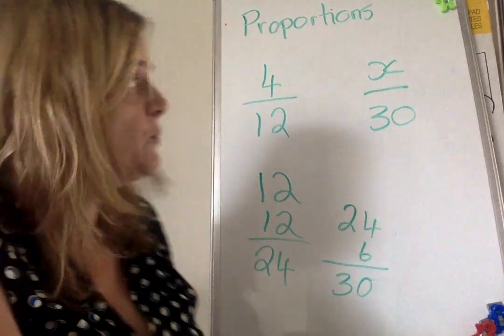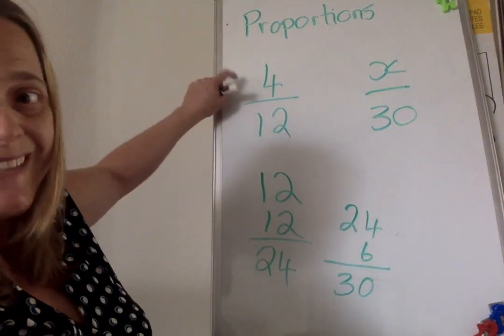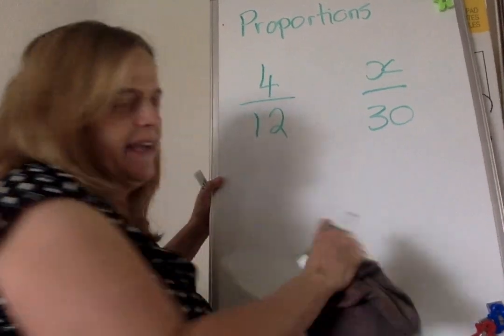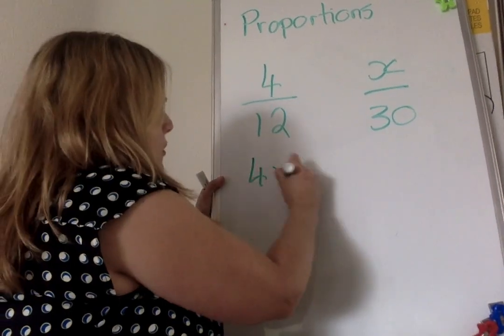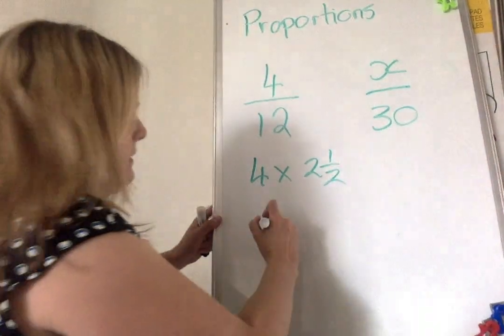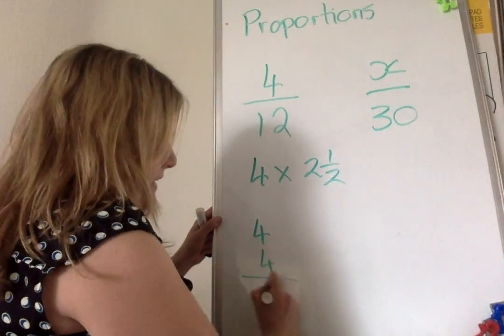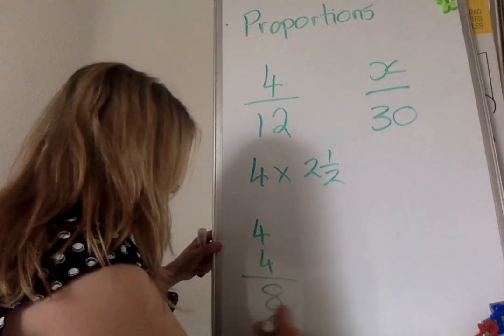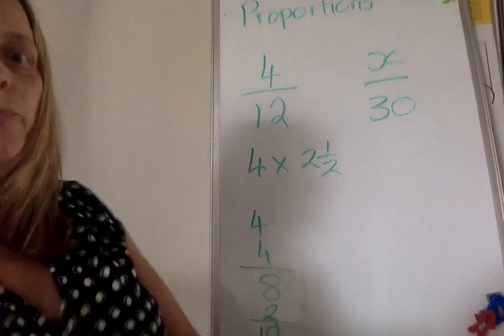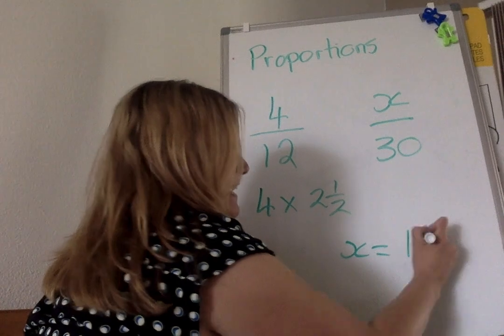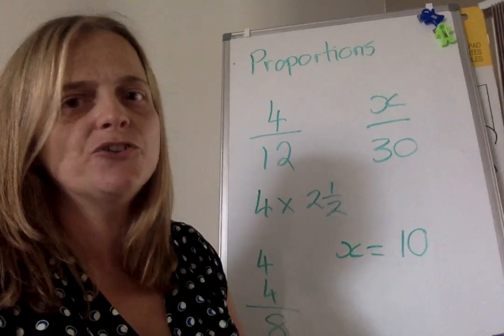So now you have to do the same here. You have to multiply the 4 by 2.5. So 4 times 2.5: well, 2 times 4 would be 8, and half of 4 is 2, and the answer will be 10. So this time, X is 10.